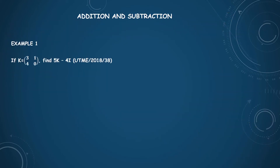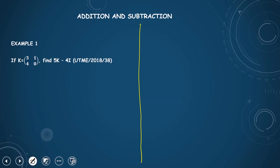Now let's go to addition and subtraction. The first question is from 2018, question 38. If K equals [3, 4; 1, 0], find 5K minus 4I. Remember, whenever you see I, it means the identity matrix. Because K is a 2×2 matrix, we are going to use the 2×2 identity matrix, which is [1, 0; 0, 1].